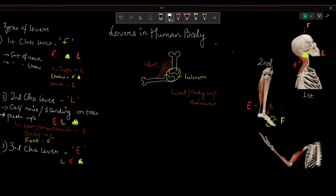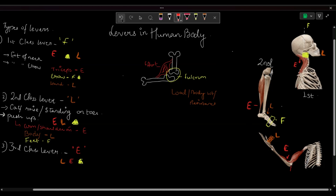Let's imagine Zee is at the gym working on his biceps and lifting a dumbbell. The weight is the dumbbell he is lifting. He is contracting his biceps, which are working as effort, while the movement is taking place at the elbow joint, which is working as fulcrum. The effort is in the center of the load and fulcrum, representing the third order lever. Always remember: we place the effort where the muscle is inserting.